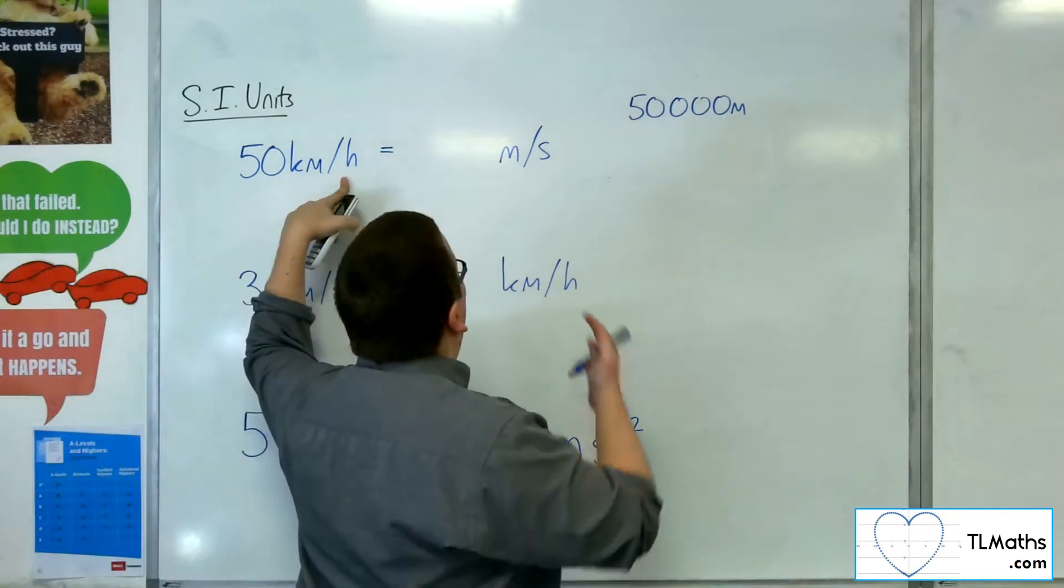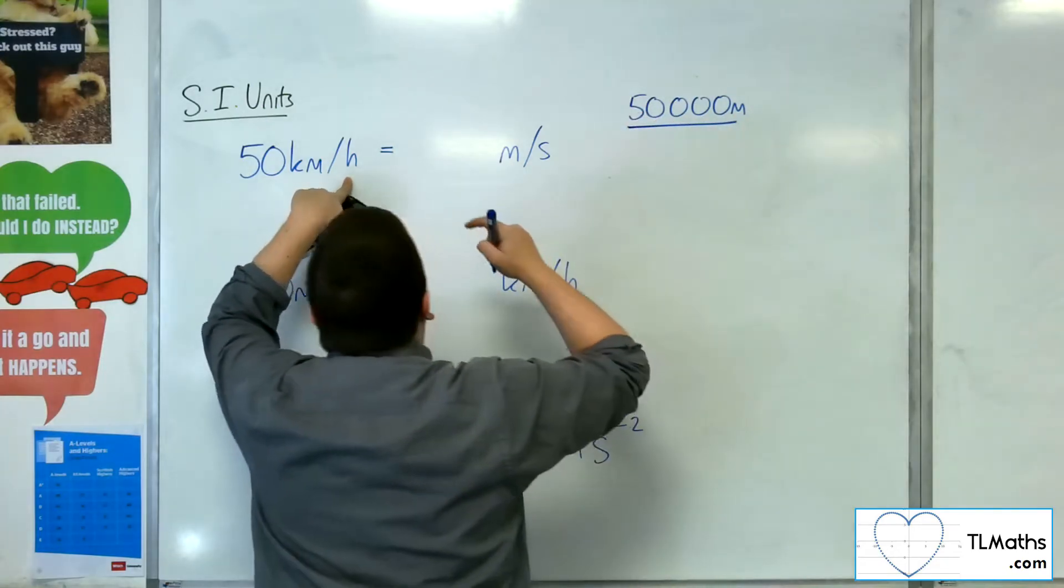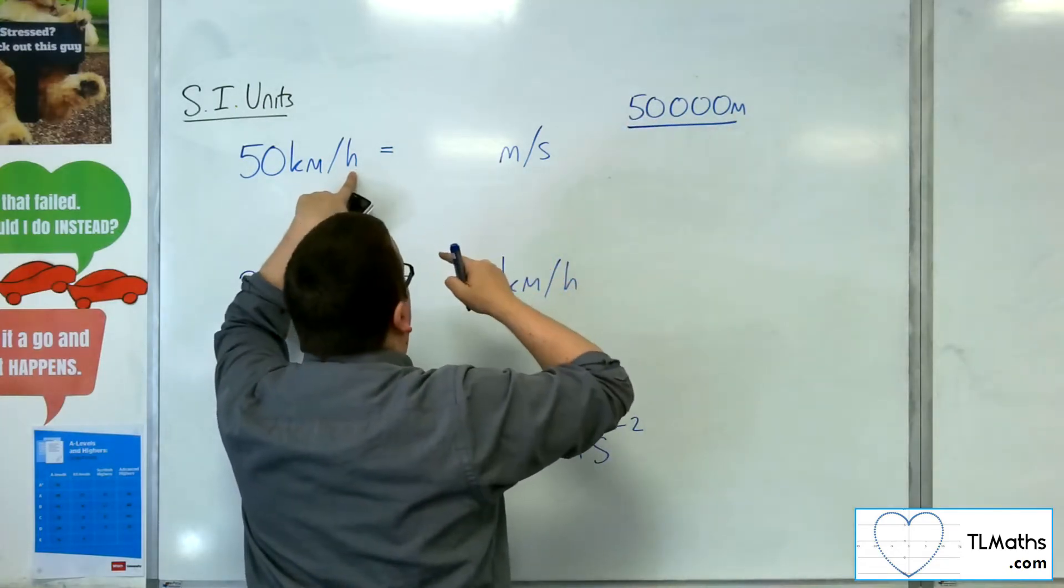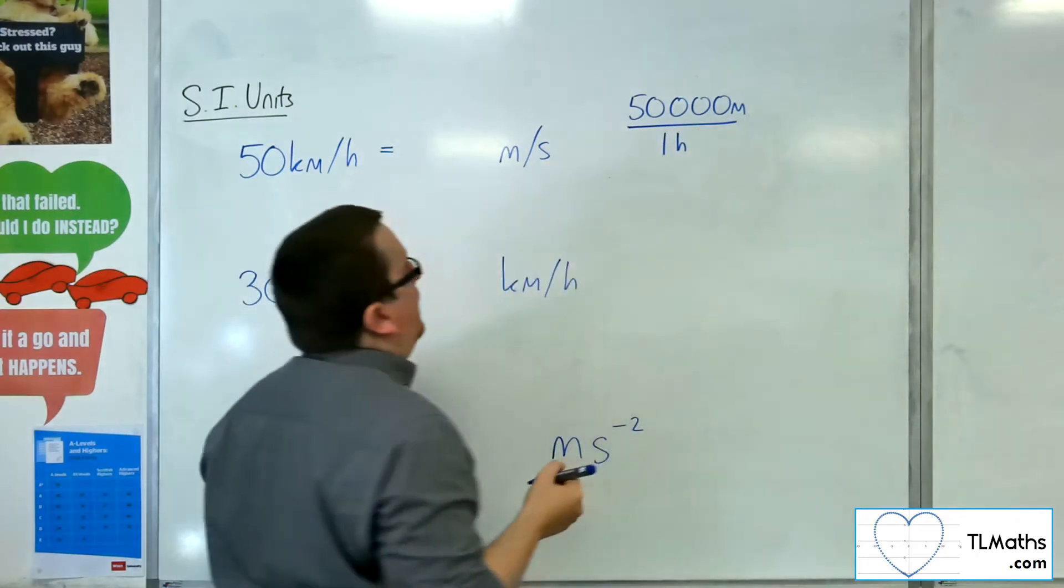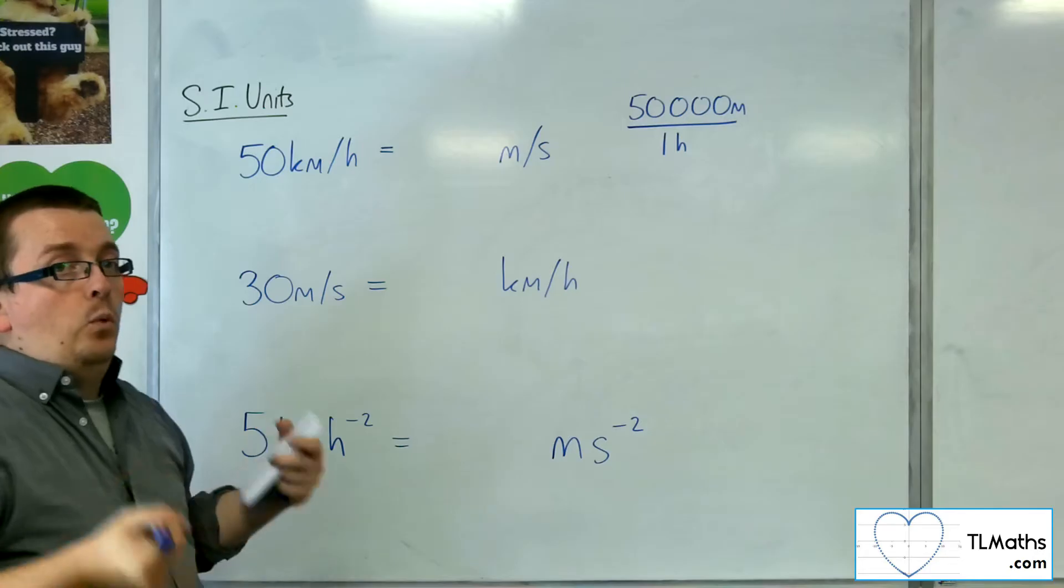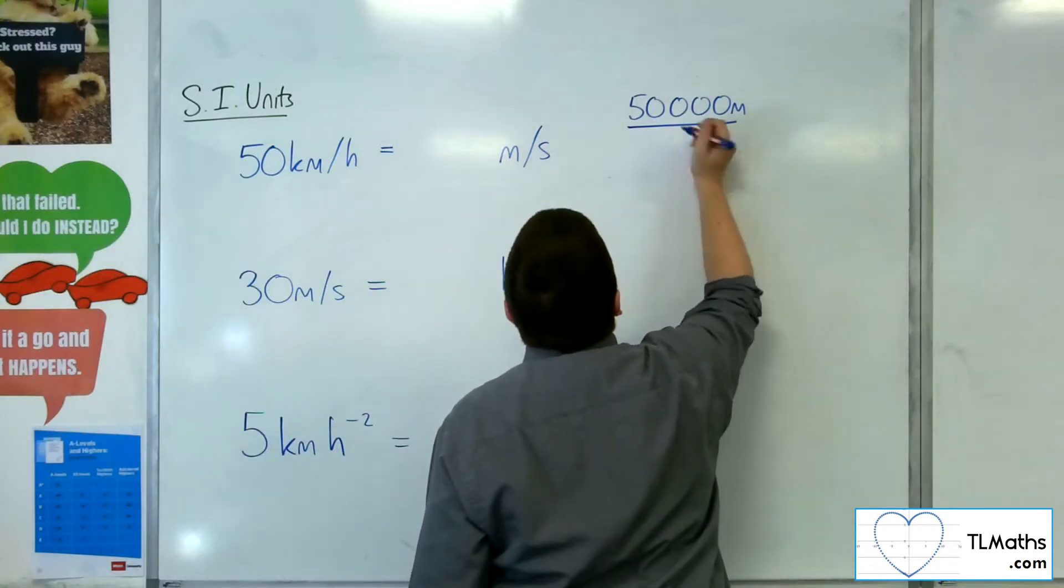And then we need to get it into seconds. It's currently in hours. So we've got this 1 hour. 50,000 metres in 1 hour.